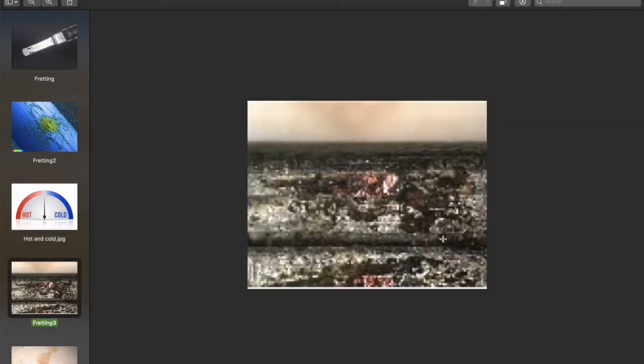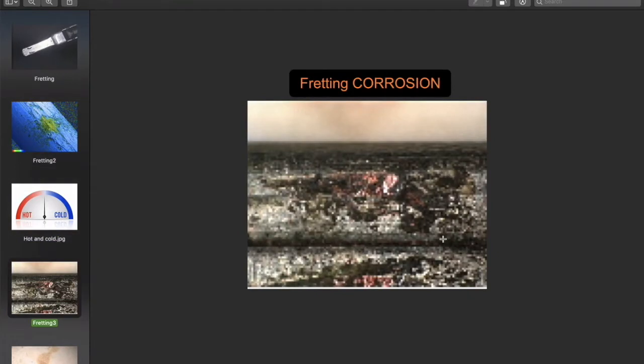Fretting corrosion is defined as the combination of fretting wear and corrosion, mainly due to oxidation. Fretting wear and oxidation can affect most metal types, but tin-plated electrical contacts are particularly susceptible to fretting problems.